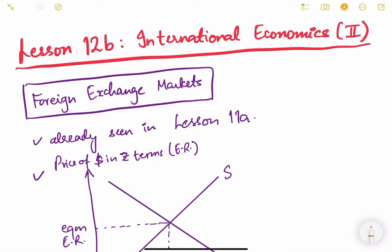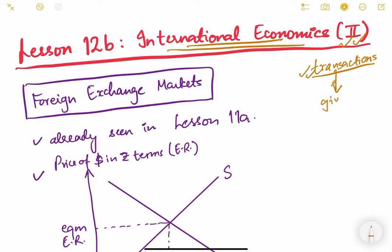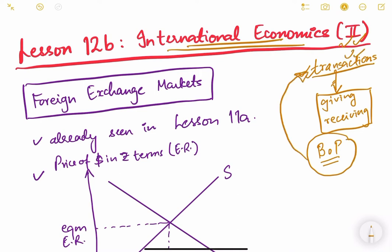Hello friends, let us continue international economics. This is the second video of this lesson. In the first video, we have seen the meaning of international economics — open economy macroeconomics. An economy is said to be an open economy when there are transactions taking place between one country and another. Balance of payments is the systematic record of these transactions between one country and the rest of the world.